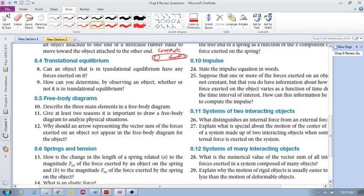Can an object that is in Translational Equilibrium have any forces exerted on it? When we look at this word equilibrium, what this is telling us is that it's moving at a constant velocity, which means that its acceleration is zero. But of course, an object can have forces exerted on it.